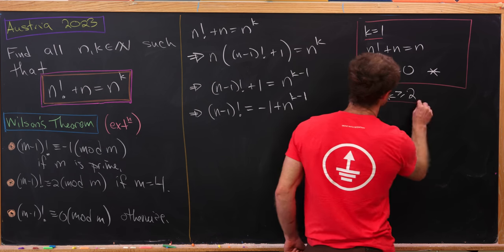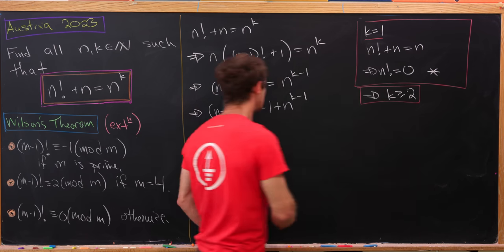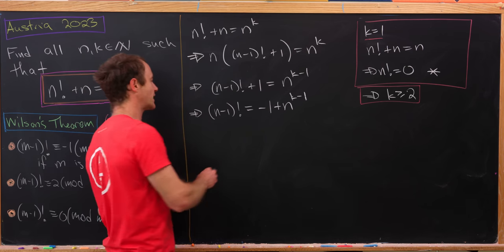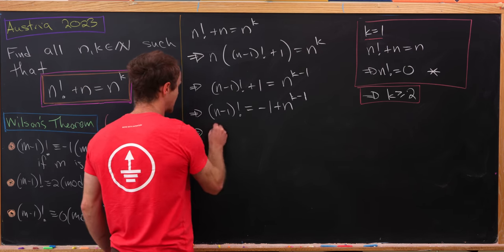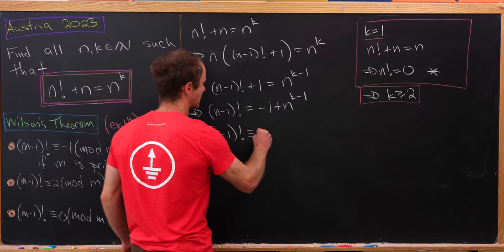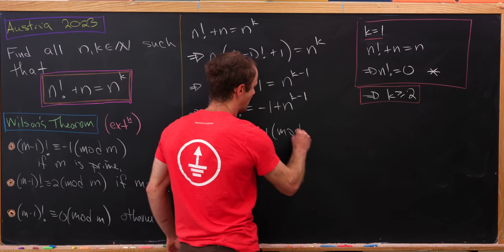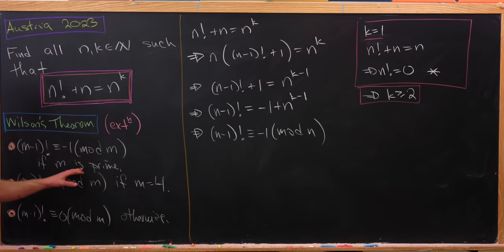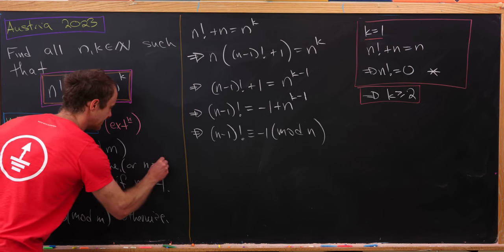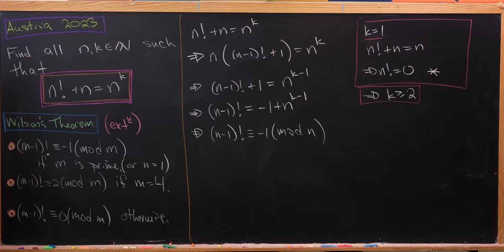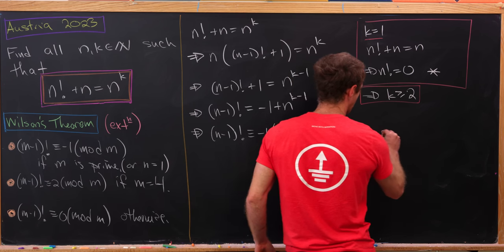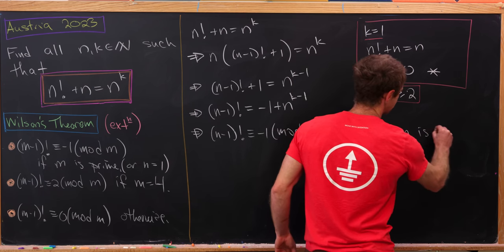Since k ≥ 2, n^(k-1) is a multiple of n, so reducing mod n gives (n-1)! ≡ -1 mod n. By Wilson's theorem, this tells us that n is prime — or n equals 1, though that's not very interesting. So n = 1 or n is prime.